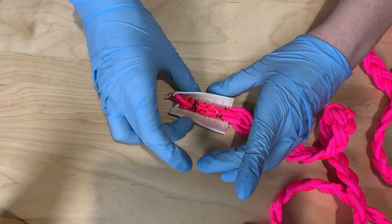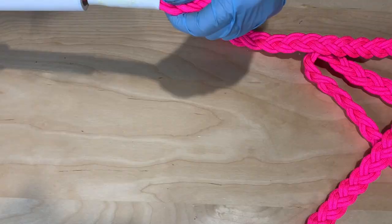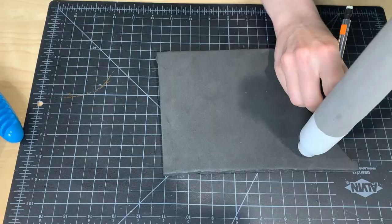Then to attach it to the handle, I stitched the ends of it together and wrapped those ends in a little bit of EVA foam to make it a really snug fit on the inside of that PVC pipe. I then used contact cement and glued it directly into the inside of the PVC pipe.